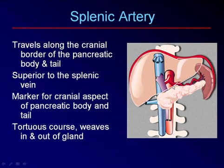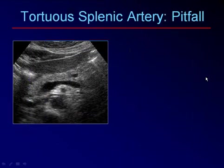The splenic artery has a tortuous course and travels along the superior border of the pancreas, making it a marker for the cranial edge of the gland. It lies superior to the splenic vein, which is directly behind the body of the pancreas. Notice that it weaves in and out around the top part of the gland. Even in young people it may be somewhat tortuous. This is important to remember because it creates a significant pitfall.